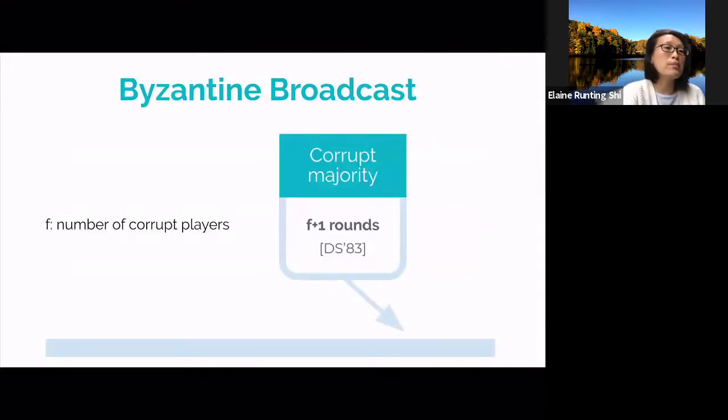An important performance metric for Byzantine broadcast is the protocol's round complexity. Dolev and Strong showed that in the presence of F corruption, we can have a deterministic protocol making use of ideal signatures that achieves Byzantine broadcast in F plus one rounds. The protocol works for any choice of F, and it works even when a majority of the players are corrupt.